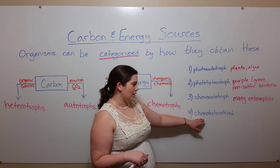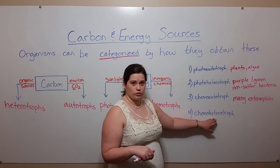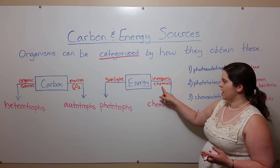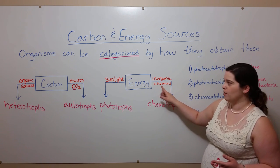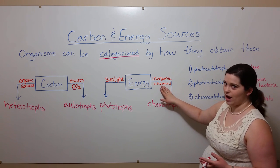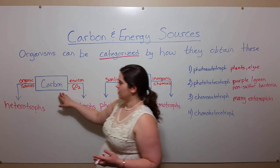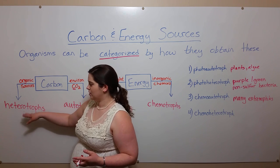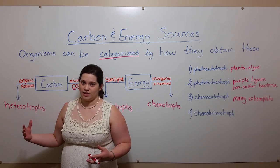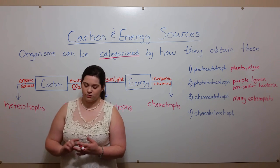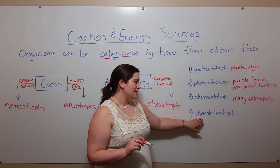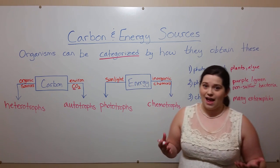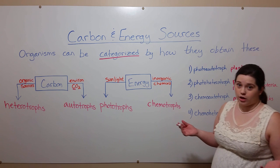That fourth category is chemoheterotrophs. These are organisms that get their energy from inorganic chemicals that are metabolized to extract energy, and they get their carbon from organic sources — perhaps things that they eat or take up in some way to harvest the carbon. The best examples of chemoheterotrophs, and the ones we're all familiar with, are members of the animal kingdom, including humans.